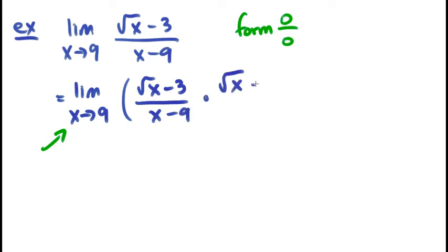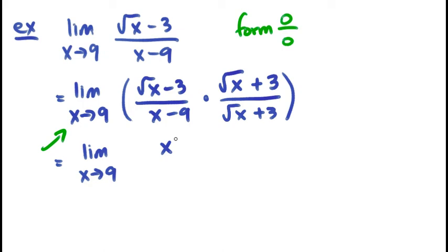So root x plus 3 over root x plus 3. And use that as a trick to help us simplify things. So as a numerator, I get root x times root x, which is x. Plus 3 root x and minus 3 root x cancel each other out. And minus 3 times positive 3 is x minus 9.